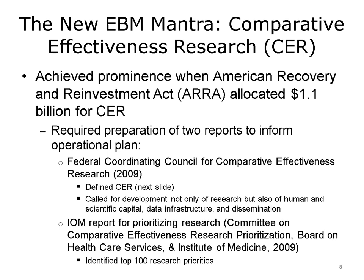The Federal Coordinating Council report defined CER. The report called for emphasis not only on the research that needs to be done, but also on other aspects around CER, such as human and scientific capital. CER requires developing individuals with the expertise to do the research, scientific methodology to carry it out, data infrastructure including registries, data warehouses, and other electronic data sources to support it, and a mechanism to disseminate this research to decision makers, patients, clinicians, and policy makers. The Institute of Medicine report prioritized 100 top research objectives that address not only common diseases that require a lot of resources to treat, but also issues around healthcare delivery and health disparities.